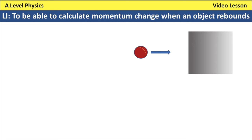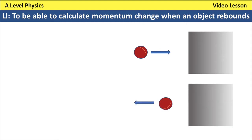Let's start by determining what we mean by a rebound collision. Here I've got a cricket ball being thrown at a wall, and that ball is then going to rebound away, so its direction has changed. The momentum of the ball afterwards is in the opposite direction, and that is significant because momentum is a vector.